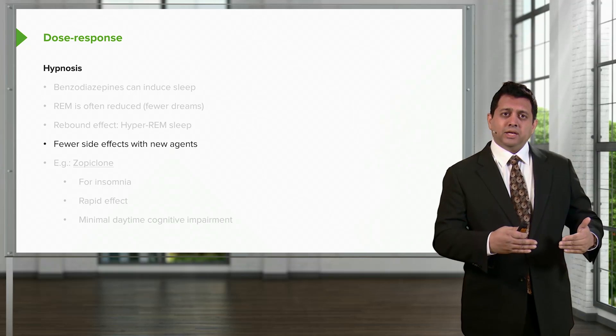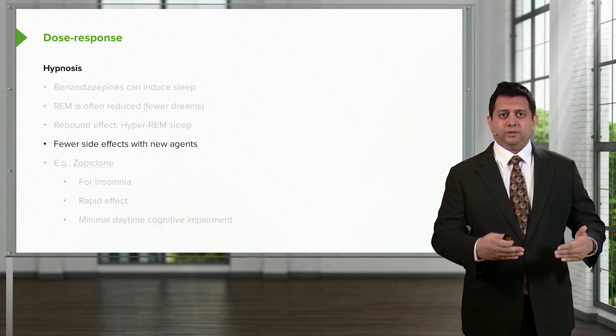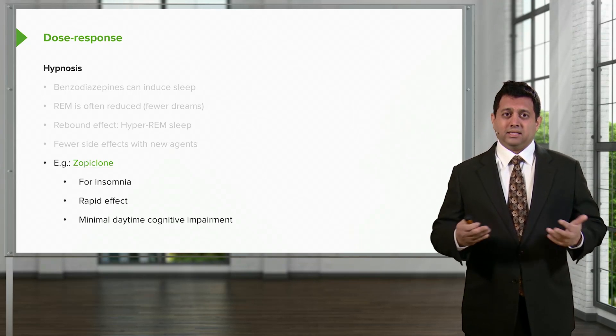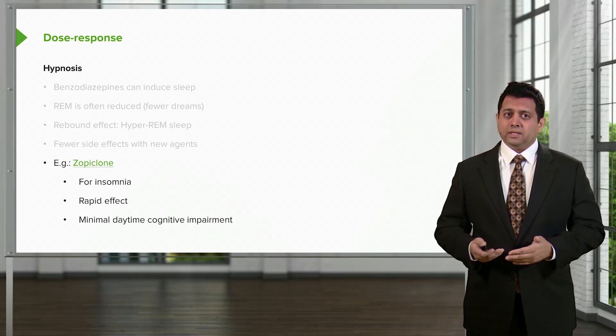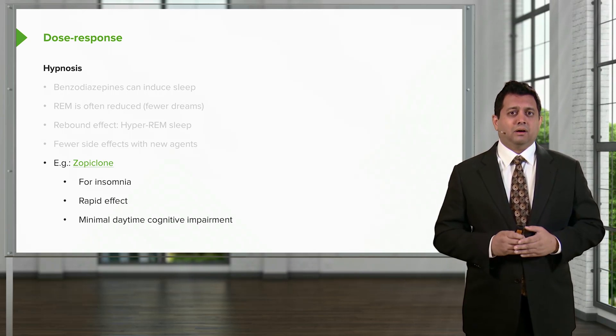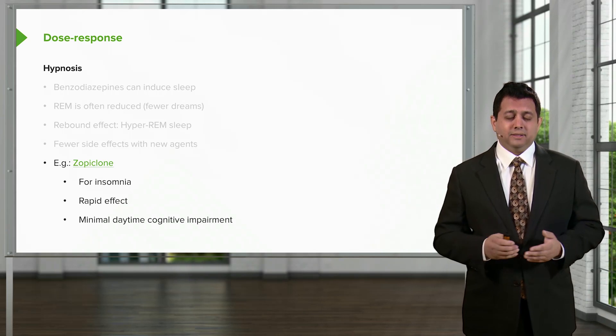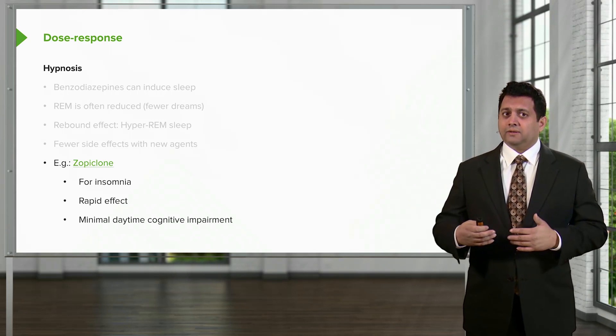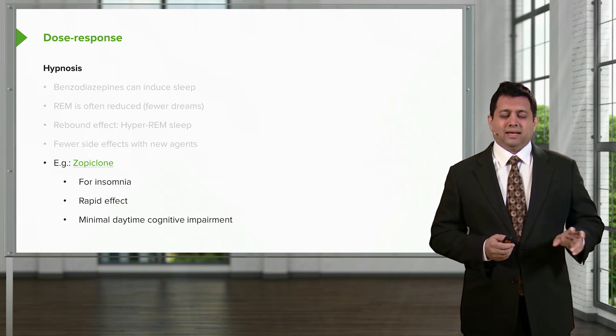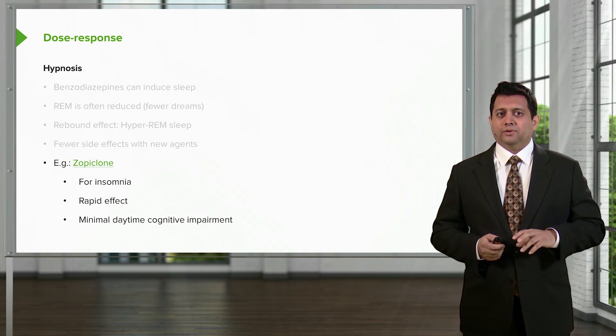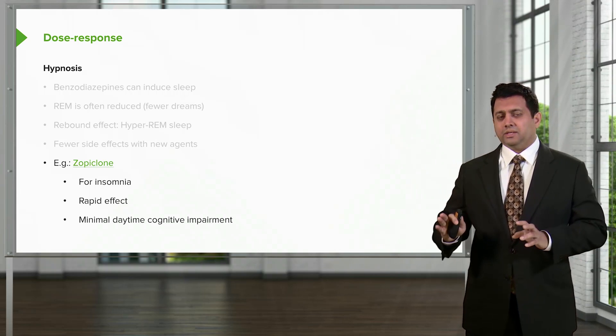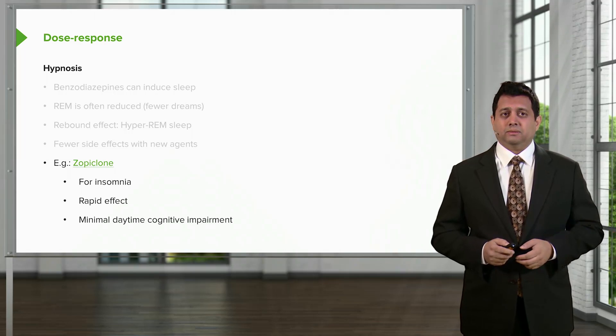As you get into the newer agents, we're starting to see fewer and fewer side effects. So a good example of that kind of a drug is zopiclone. We use it for insomnia. It has a very rapid onset of action and it has minimal daytime cognitive impairment. This is a very good drug for use in insomnia and it's essentially replacing the older Ativan which is Lorazepam or Versed. It's replacing all of those old medications with these new medications because of their efficacy and lack of symptoms.